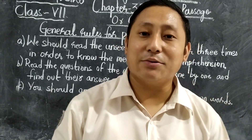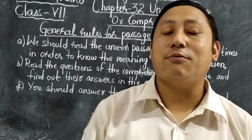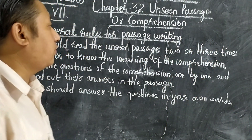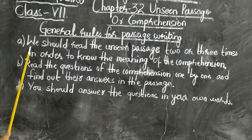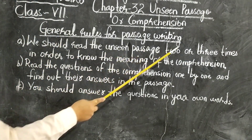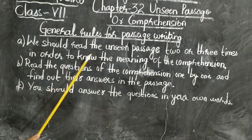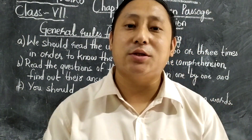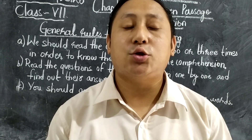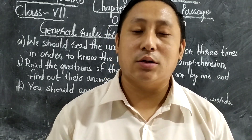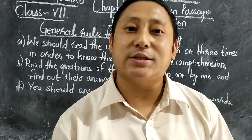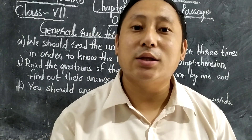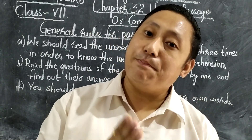There are some general rules which have to be kept in mind while writing the unseen passage. The first point is: you should read the unseen passage two or three times in order to understand the meaning of the comprehension. You should always read the passage properly two or three times because you cannot reply with the answer in one reading. Only then will you get the point that the question is asking.